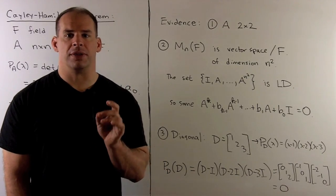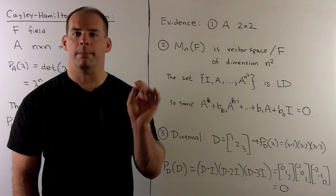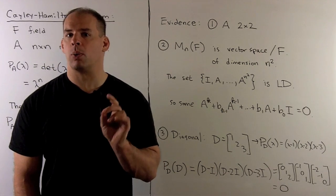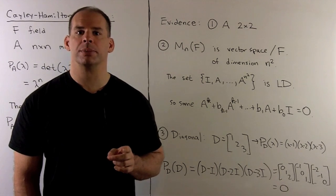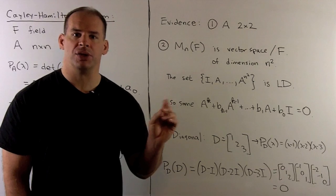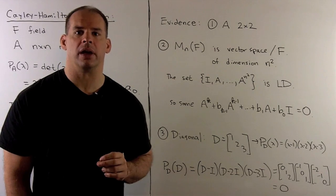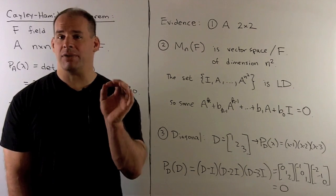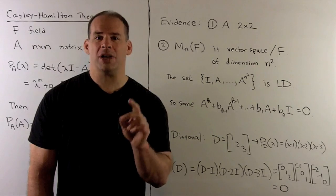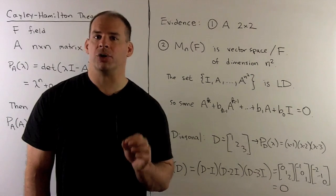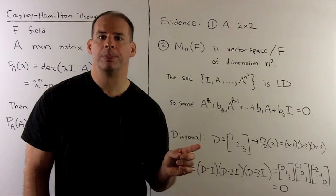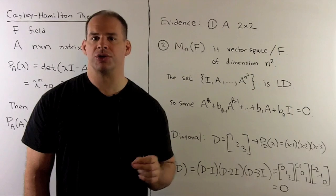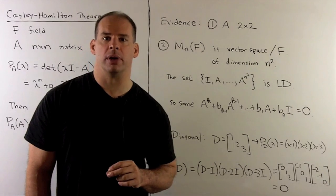When you first see the theorem, it might seem unlikely. Even now, when I work out examples, there's a small thrill when that zero comes out at the end. The obvious questions are: why should a square matrix satisfy any polynomial, and if so, where does the characteristic polynomial come in?